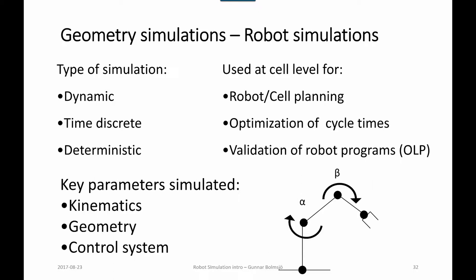They're used at the cell level for robot or cell planning, setting up a system, checking that things are working, optimizing cycle times, and validating robot programs or creating programs by using offline programming methodologies. Key parameters include kinematics, geometry, different CAD models, and their respective relations within the cell and how they are moved.